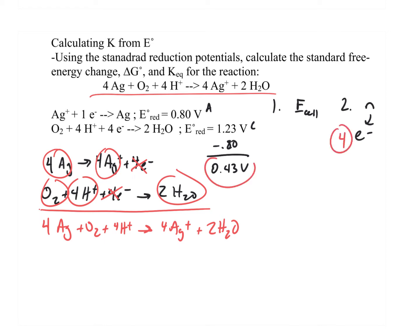Now I've identified the cell potential (0.43 V) and the moles of electrons (n = 4), so I can solve for delta G using delta G equals negative NFE. Before setting up the problem, let's note that a volt is actually a joule per coulomb. So when I use the cell potential in this formula, I use joules per coulomb rather than volts so the units cancel properly: moles cancel moles, coulombs cancel coulombs, leaving only joules.